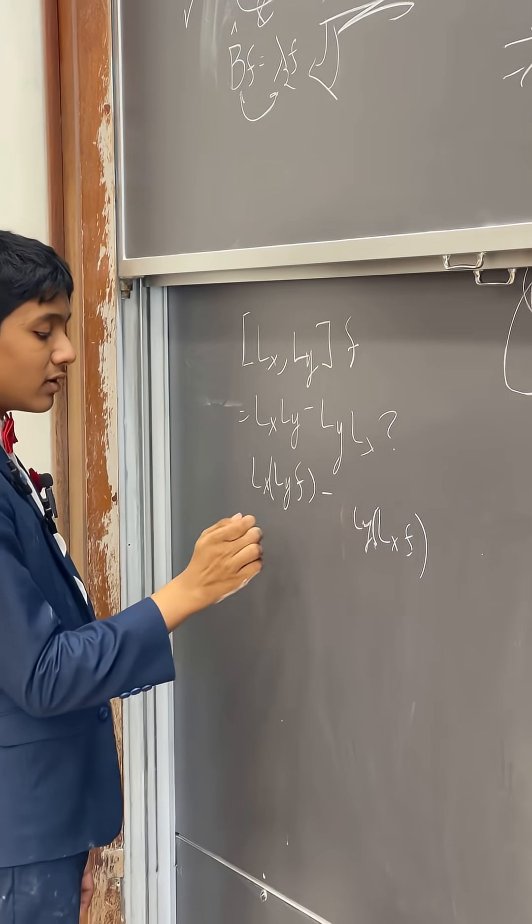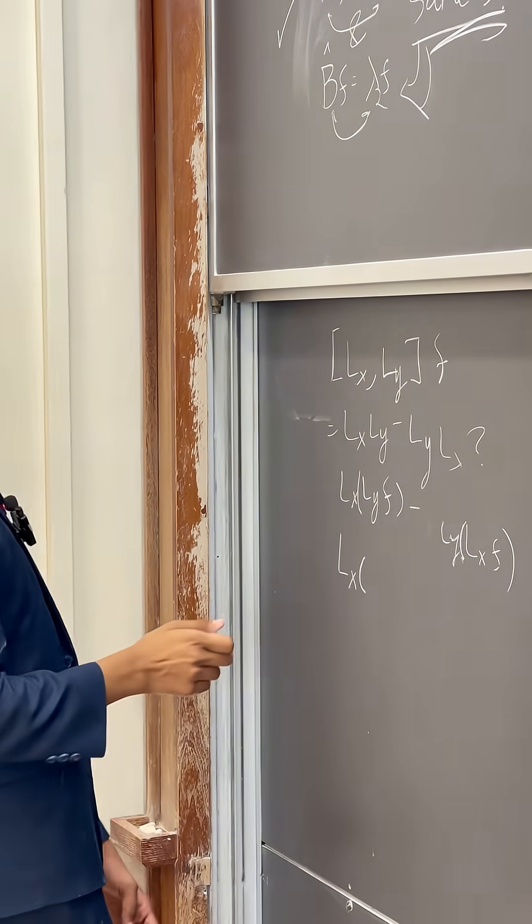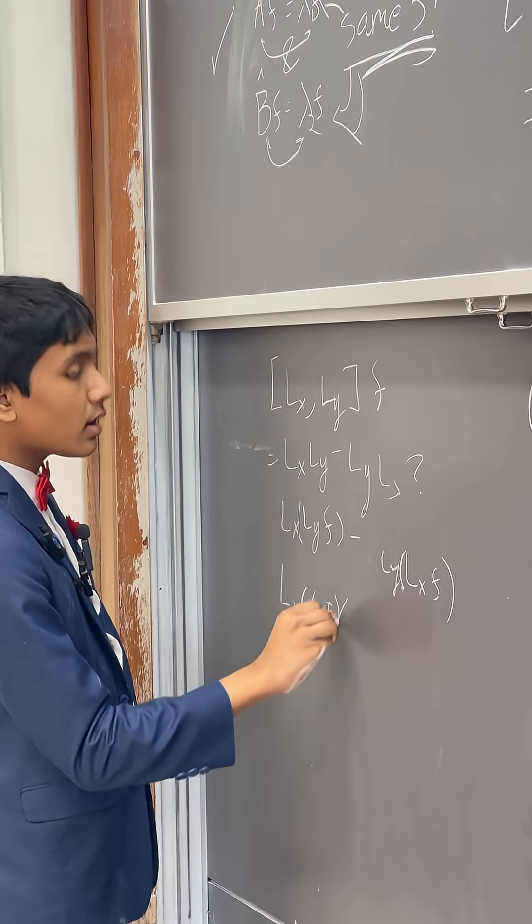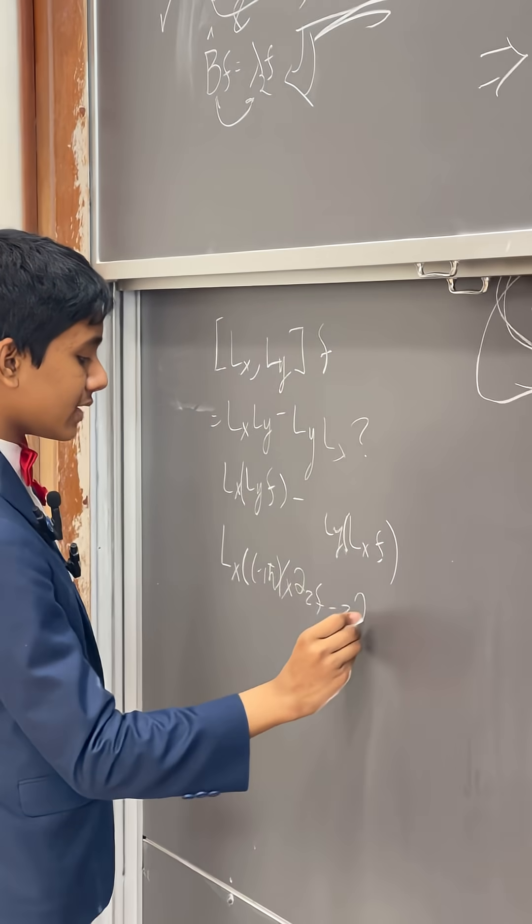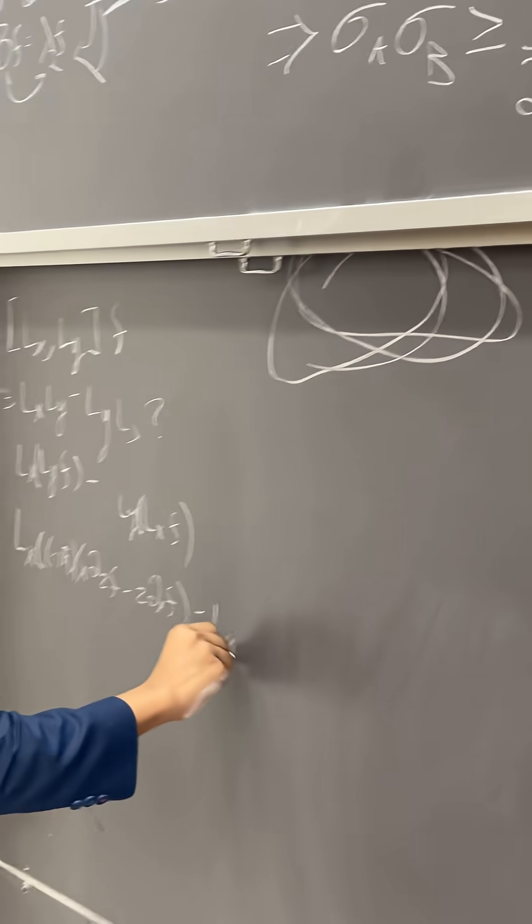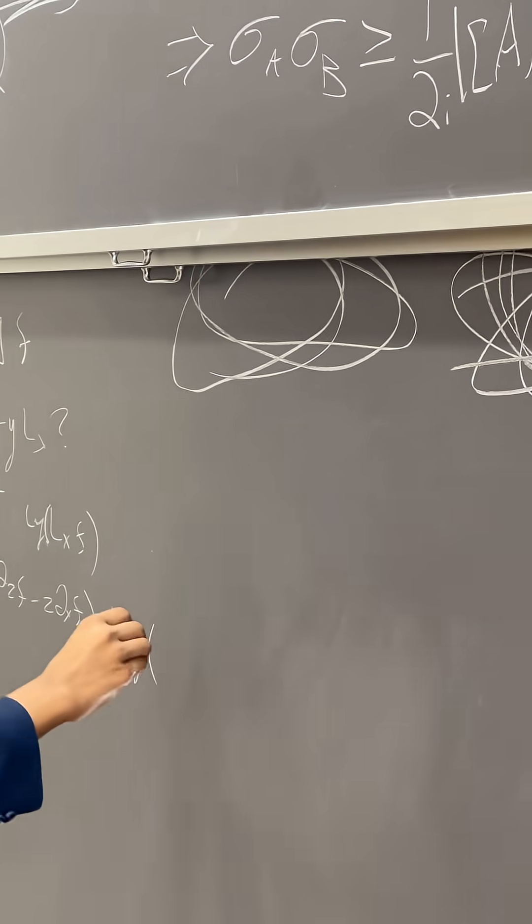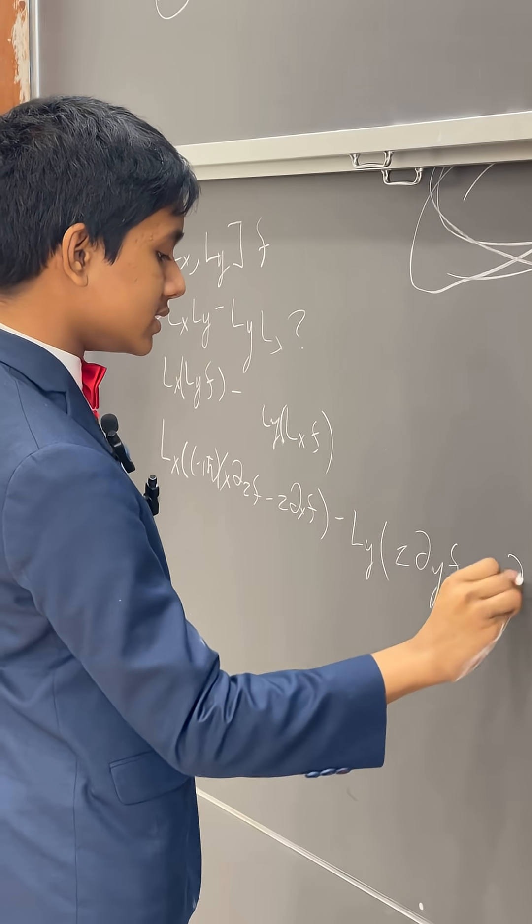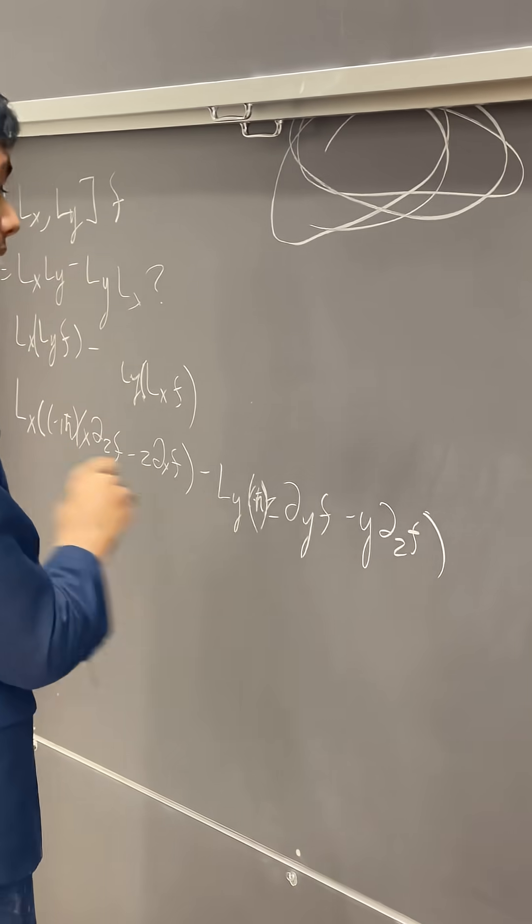So what's Ly, F in these parentheses? Ly, F is going to be minus Ix partial Zf minus Z partial Xf. And here we have Ly times Lx, F is going to be Z partial Y, F minus Y partial Zf, of course, with the minus Ix bar on the side.